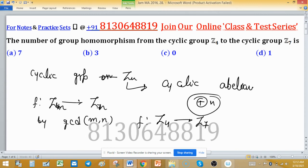Then the number of group homomorphisms is given by GCD of 4 and 7, and this is 1. So option D is the right choice.